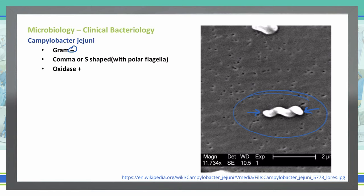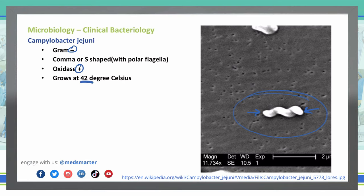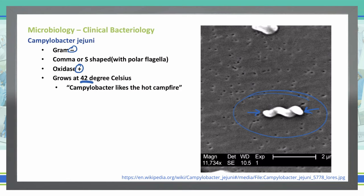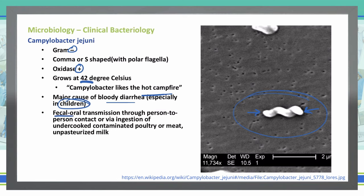Campylobacter is oxidase positive, and it grows around the 42 degrees Celsius range — it likes a really warm environment. Remember, our body temperature is around 37 degrees Celsius, so we're talking about a higher temperature than our normal body temperature. It is a major cause of bloody diarrhea, especially in children. Its transmission is by a fecal-oral route — person-to-person contact or ingestion of contaminated products like undercooked poultry or meat, or unpasteurized milk. Pasteurizing milk will help kill off Campylobacter jejuni that could be present.